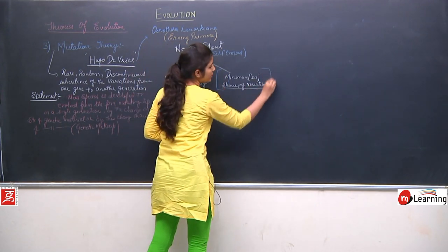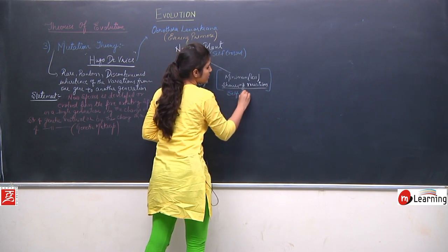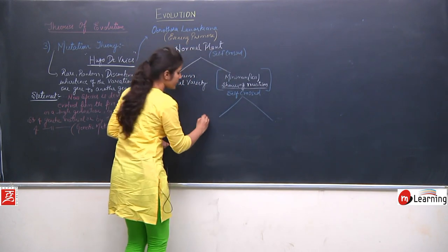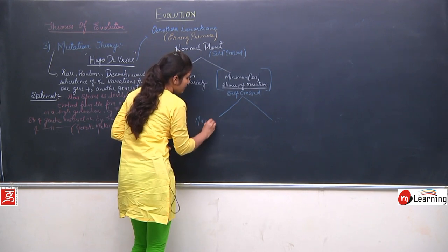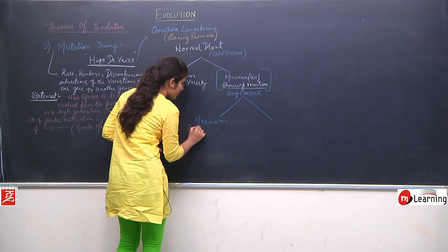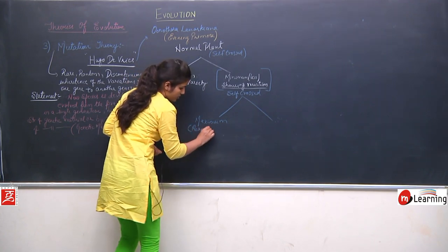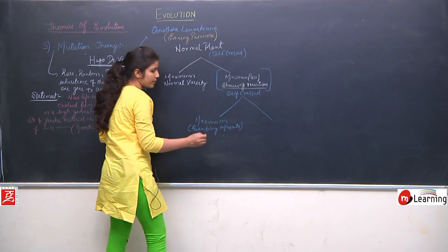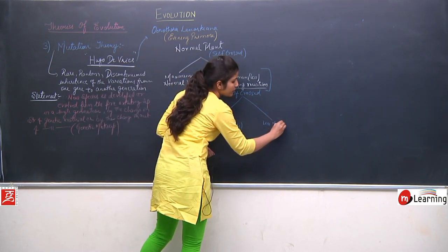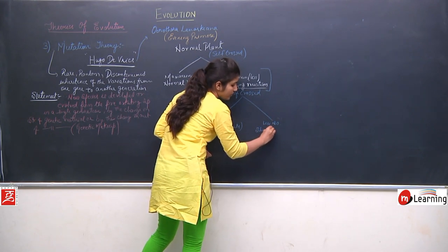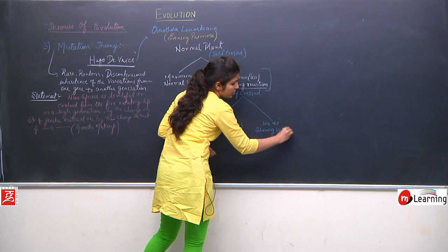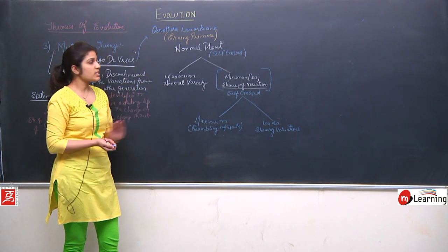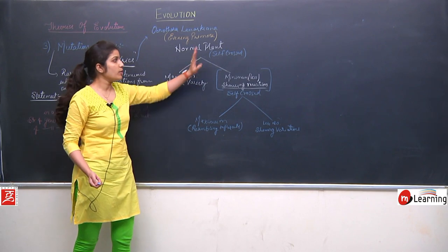Again, he took the variant plant and self-crossed it. In the next generation, again the maximum were resembling the parents, and fewer numbers were showing variations from the parent generation. This experiment showed that mutation was happening.